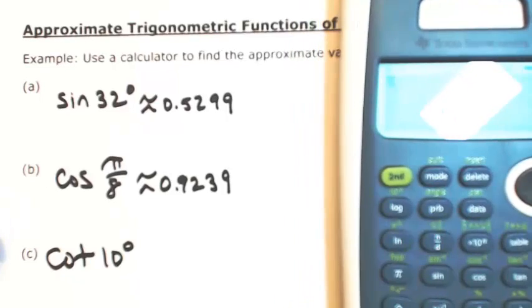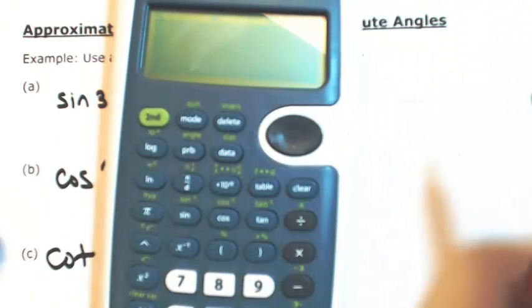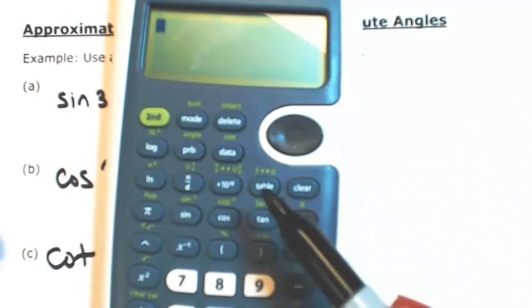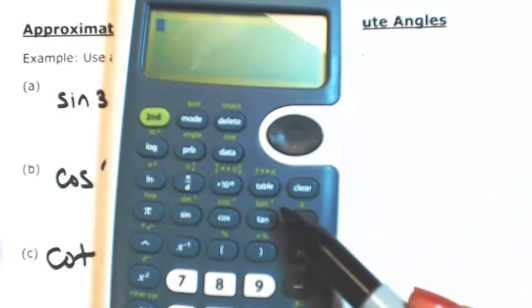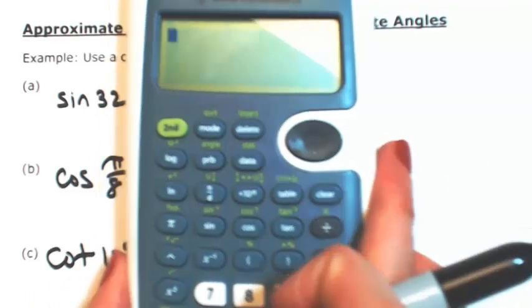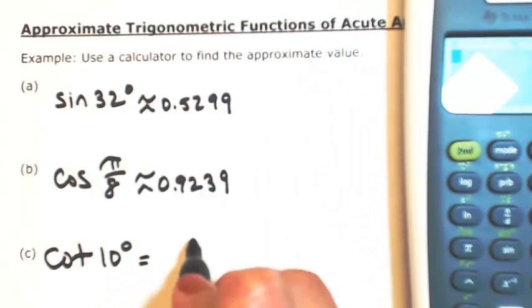Be really careful here. On your calculator, if you look above tangent, it says tangent to the minus 1. This minus 1 is not reciprocal—this minus 1 is inverse. We'll cover that in later sections. So if I want to find the cotangent, I need to do the reciprocal of tangent.